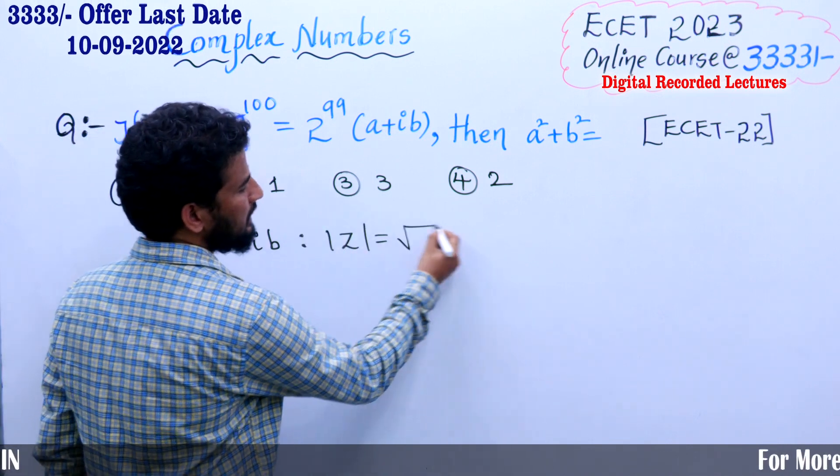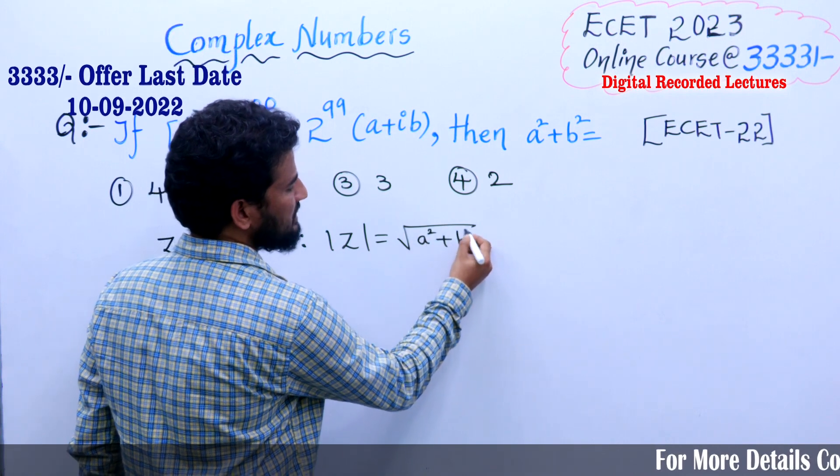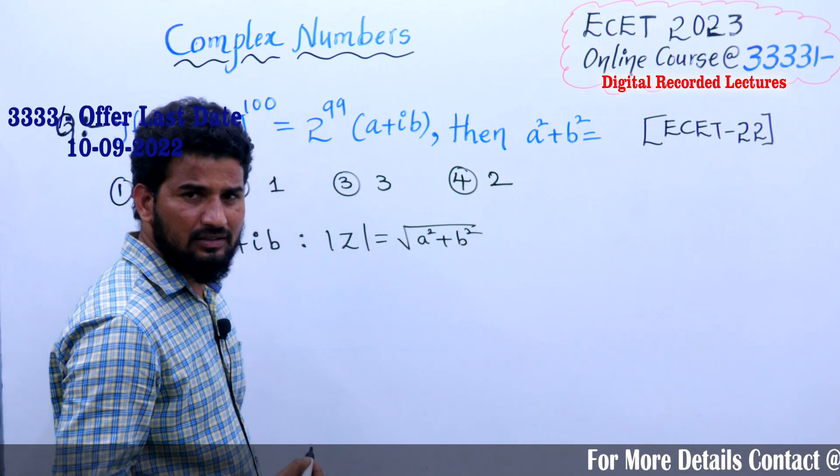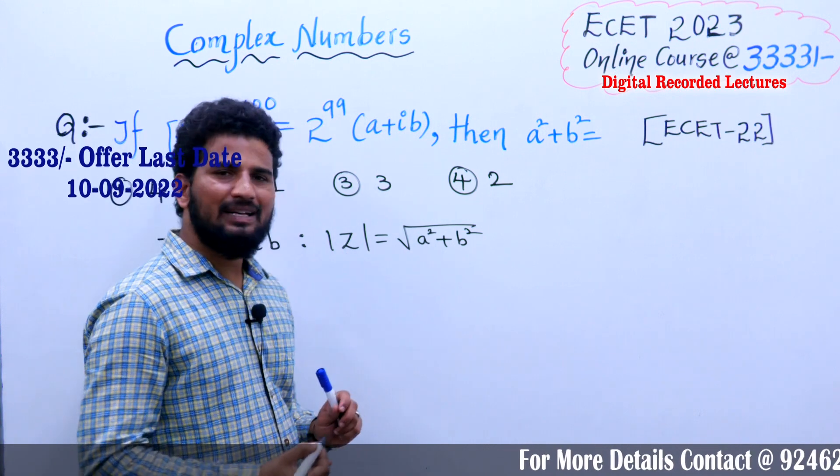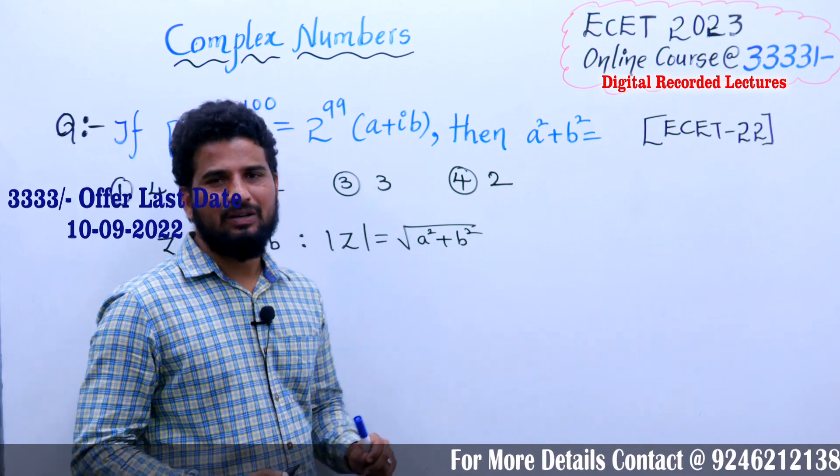The modulus |z| is nothing but √(a² + b²). Is it right? Modulus of z in formula is √(a² + b²).